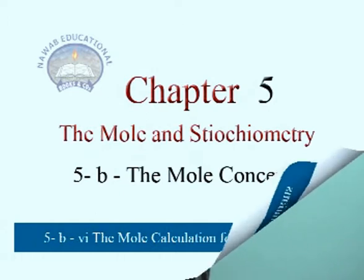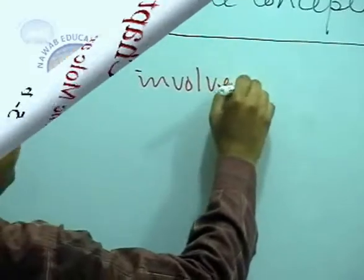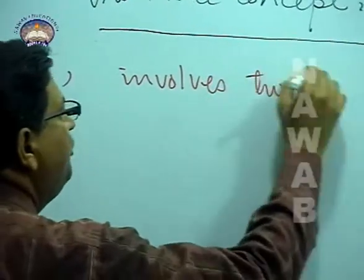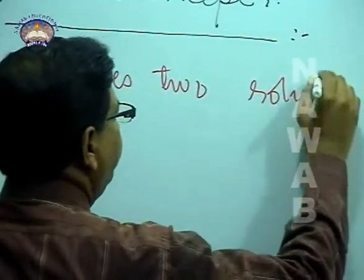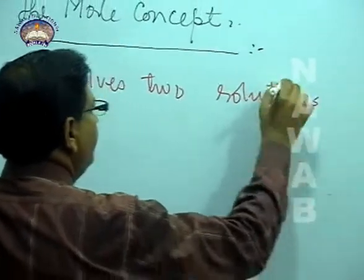This type of calculation involves two solutions, where one substance is known in two solutions.